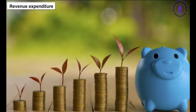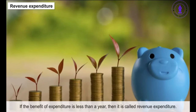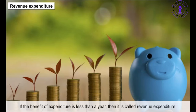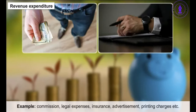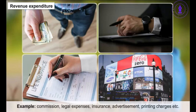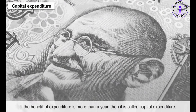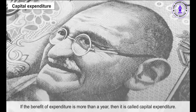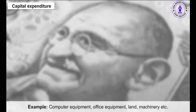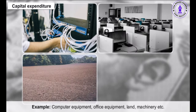Revenue expenditure: if the benefit of expenditure is less than a year, it is called revenue expenditure. Examples include commission, legal expenses, insurance, advertisement, and printing charges. Capital expenditure: if the benefit of expenditure is more than a year, it is called capital expenditure. Examples include computer equipment, office equipment, land, and machinery.